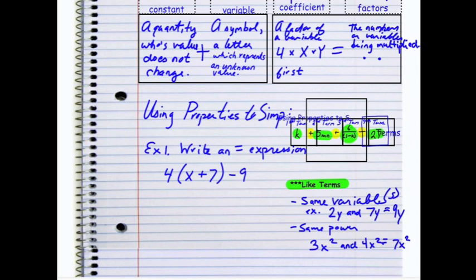So if I'm going to write an equal expression to 4 times (X plus 7) minus 9, I want to use a property that I know to write this expression. And when I look at this, immediately I think of distributive. So I see that 4 can be distributed to the X and to the 7.